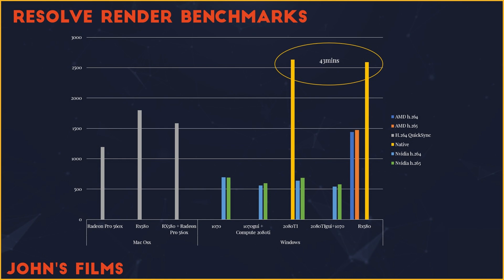My next finding through this benchmarking was just how painful it is to use the native rendering. It took 43 minutes on the Threadripper machine to render this 30-minute 4K H.264 video. The 1070 and the 2080 Ti were basically the same because the majority of the work was done directly on the processor, which didn't change. This again highlights the importance of getting the Studio version if you're going to do any significant amount of work, because the native encoder is the only option in the render tab of DaVinci Resolve Free Edition.